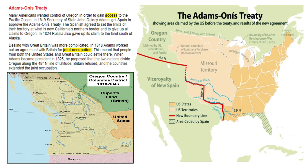Question four: how did the Adams-Onís Treaty help America's claims to the Oregon country? We agreed with Spain that they would no longer have control of the lands north of the 42-degree line of latitude. Then Russia gave up their claims. So it just came down to us and Great Britain. Question five: how did joint occupation work with the British in the Oregon country? We agreed that we would share the land — both Great Britain and the United States could both settle there at the same time.